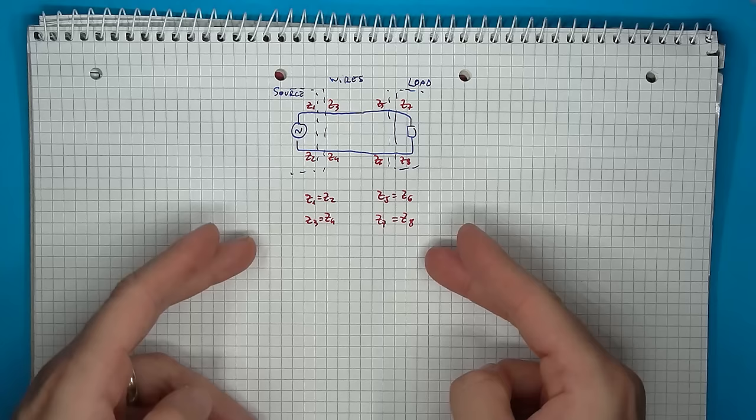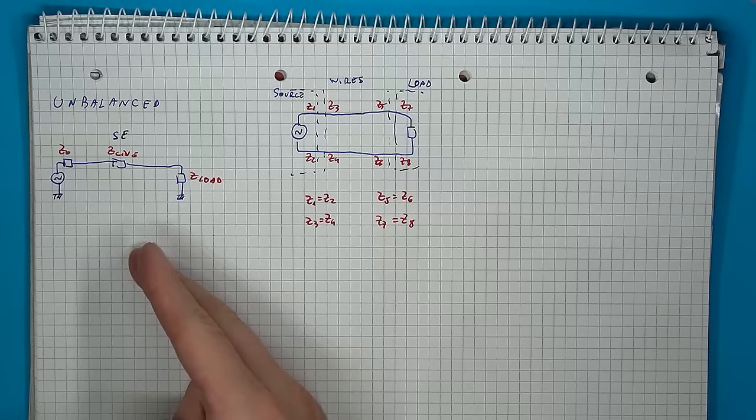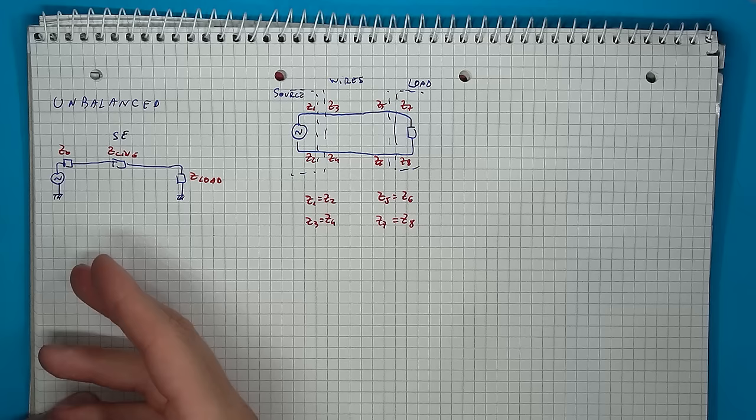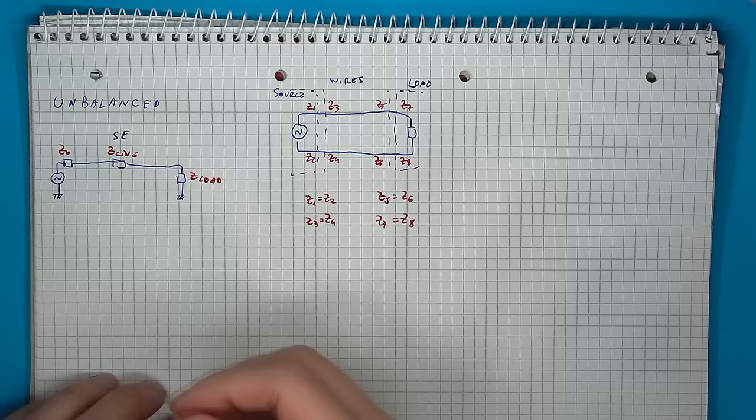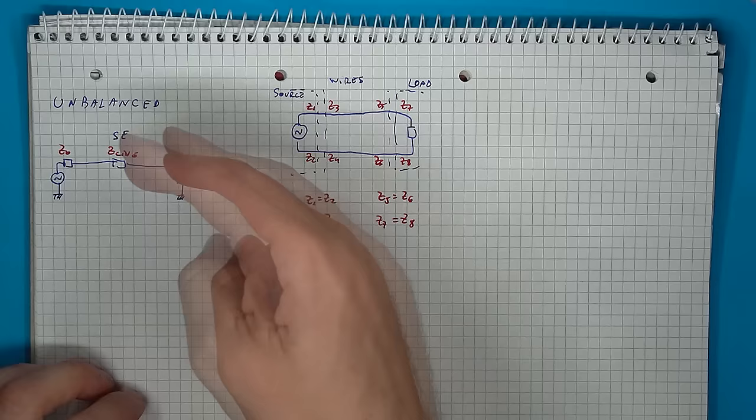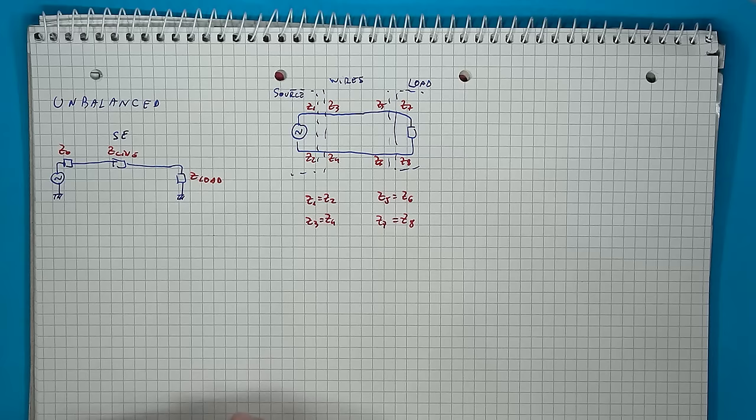So, one obvious unbalanced system is the basic single-ended circuit. Here, one line has the signal source with some internal impedance, the line can have another impedance, and the load, again, some other value of impedance, and the other line, the ground, has zero impedance. So, whatever these other impedances are, we will always have an unbalanced system.